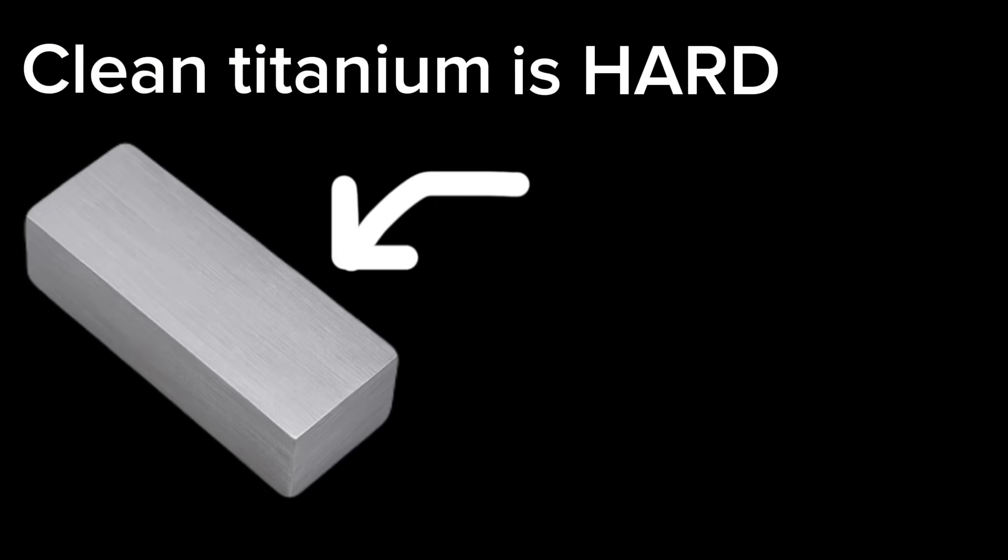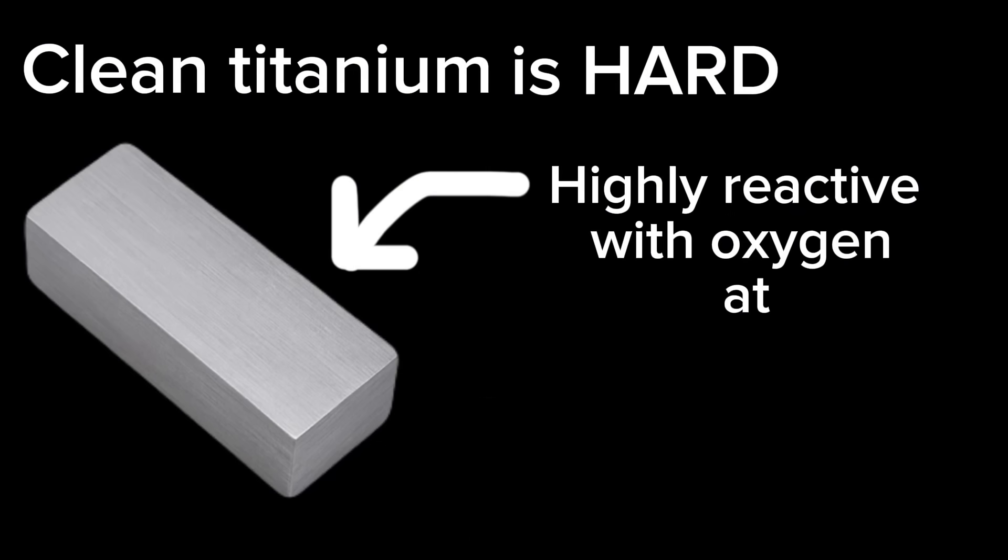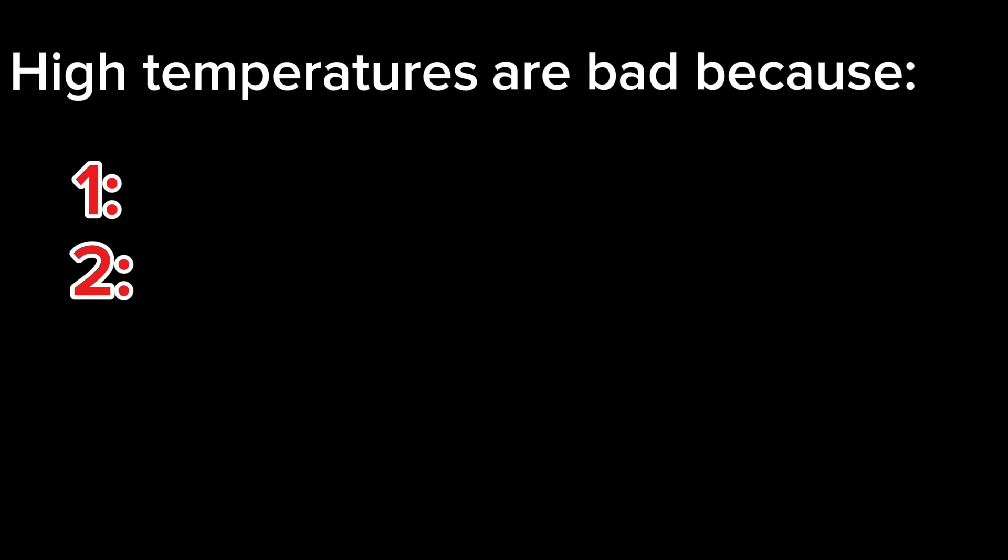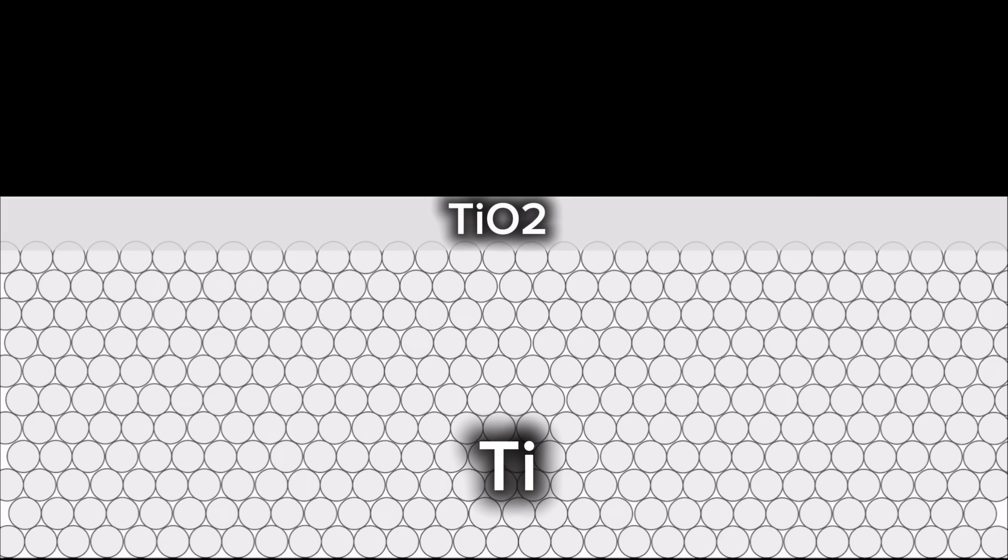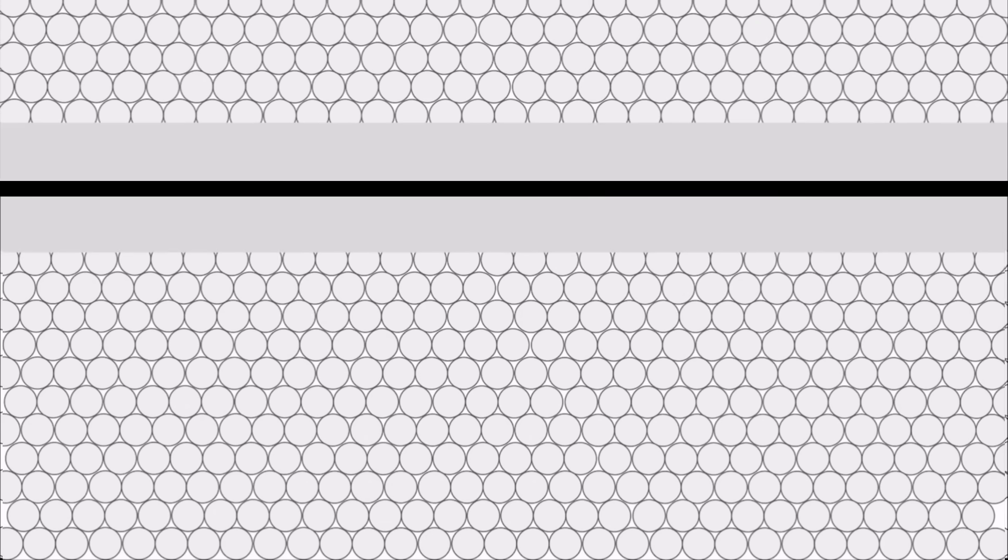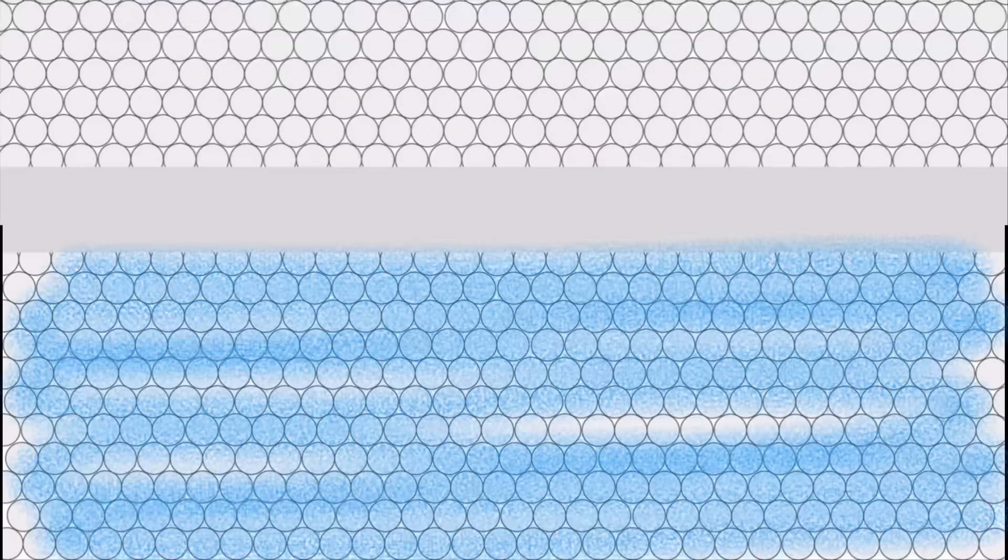And that is because titanium is highly reactive to oxygen at elevated temperatures. At these high temperatures, you have two things working against you. The first thing is a formation of a titanium dioxide layer. This makes it very difficult for two pieces of titanium to bond together at high temperatures, because the oxide is preventing that metal-on-metal contact.